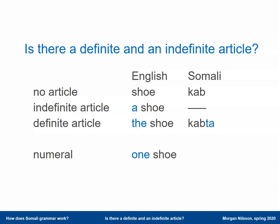Somali does have the definite article, as we have already seen, and it's added as an ending — a suffix — at the end of nouns. So 'the shoe' in Somali is 'kapta'. And of course we can express the notion of 'one shoe' in Somali. 'One' is 'hal', so 'hal kap' means 'one shoe'.